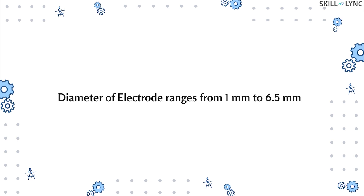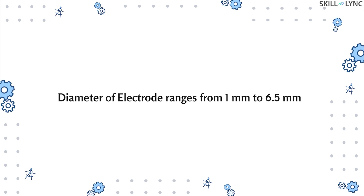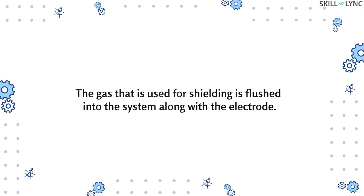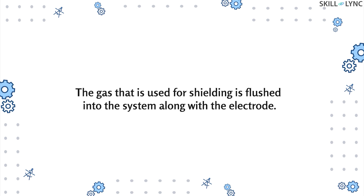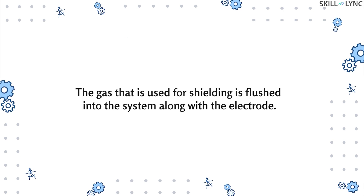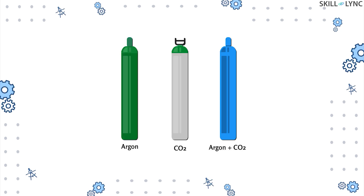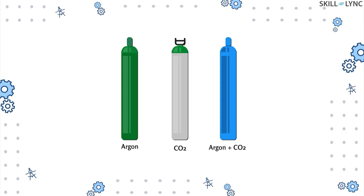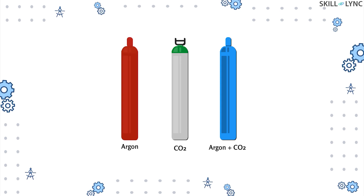The diameter of the electrode wire ranges from 1 mm to 6.5 mm. The wire thickness is dependent on the size of the parts to be joined. The shielding gas is flushed into the system along with the electrode, and selection of these gases depends on many factors.